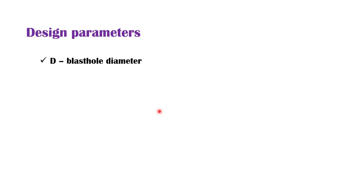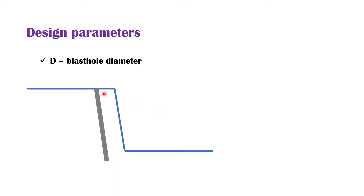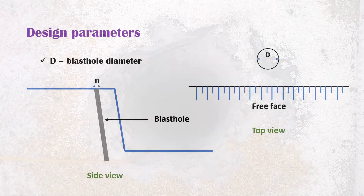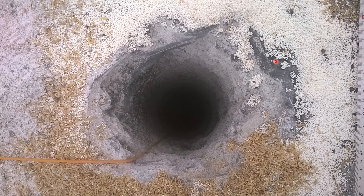The next parameter is blast hole diameter. One drill hole has been drilled in this bench. This side view can also be seen from the top. This is the free face, and this is the blast hole. The diameter of the blast hole is the blast hole diameter. This is one of the blast holes which has been drilled in the limestone rock mass.